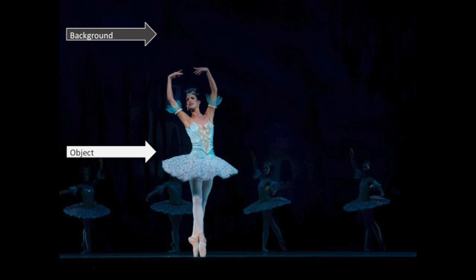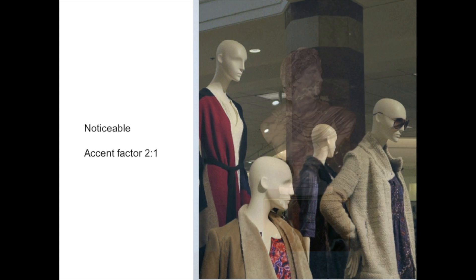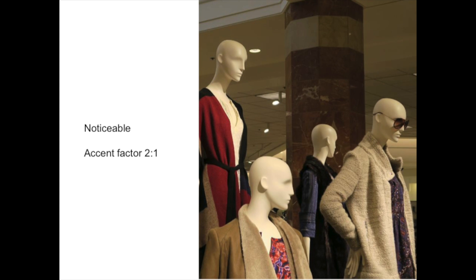We can look at some practical applications by looking at a Roman bust with different amounts of light. First, for a noticeable effect, we have an accent factor of 2 to 1 — twice the level of light on the bust as on the background. In the example of these mannequins in a shop, you can see that they are lit but they don't really stand out. You have some impression of the rest of the shop from the background, but they're not really standing out — this is a noticeable effect, but that would be all.